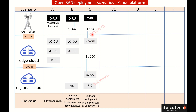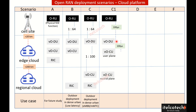Scenario C1 is a more advanced version of Scenario C, where the CU is divided into two parts: user plane functionality and control plane functionality. The user plane CU can be kept at the edge cloud for lower latency services, while for non-time-sensitive services it can be leveraged using the CU at the regional cloud.